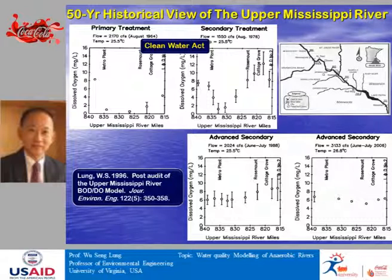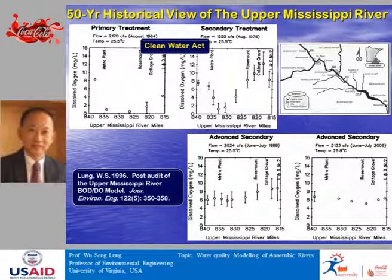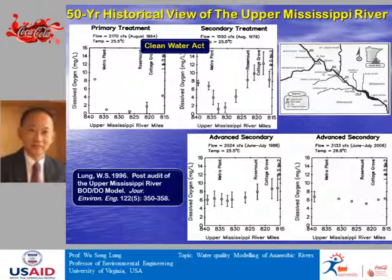Back in August 1964, with the Metro Plant discharging, the dissolved oxygen dipped to very low — probably the worst case I have encountered. This is even worse than the last two examples, though it gradually rises further downstream. In 1964, the wastewater treatment plant was providing only primary treatment — which is essentially physical process treatment with no biological process.